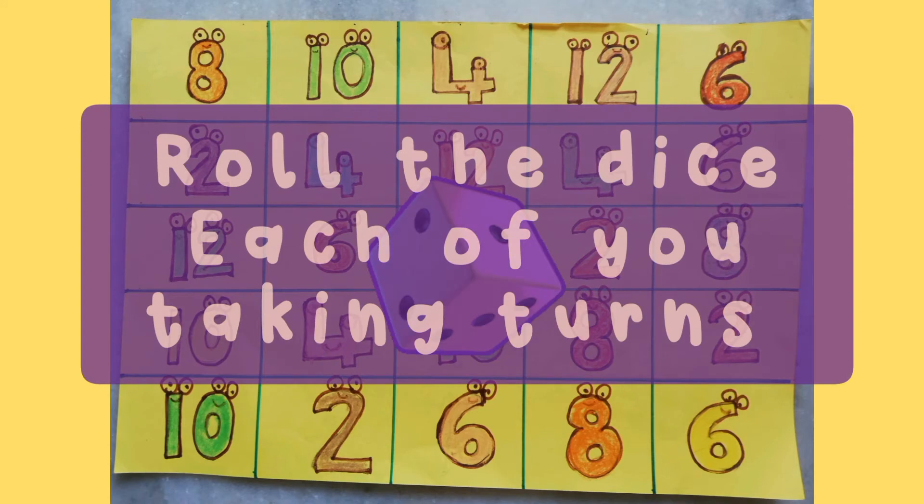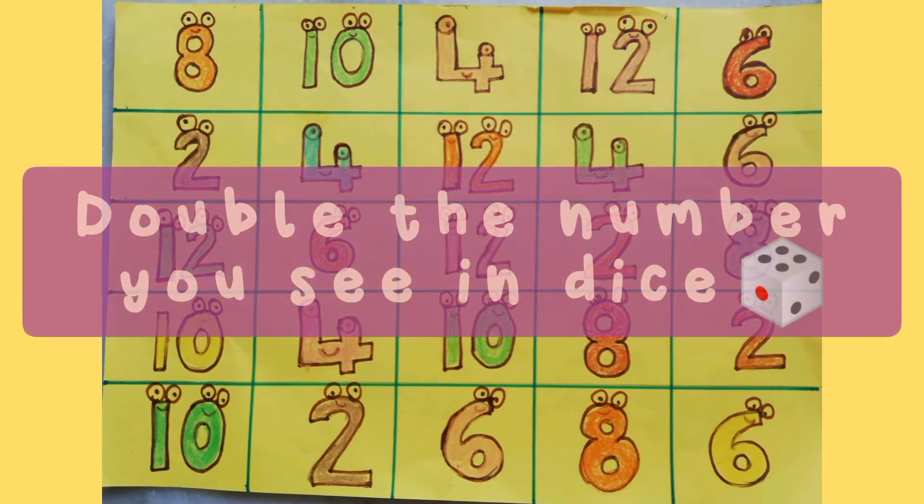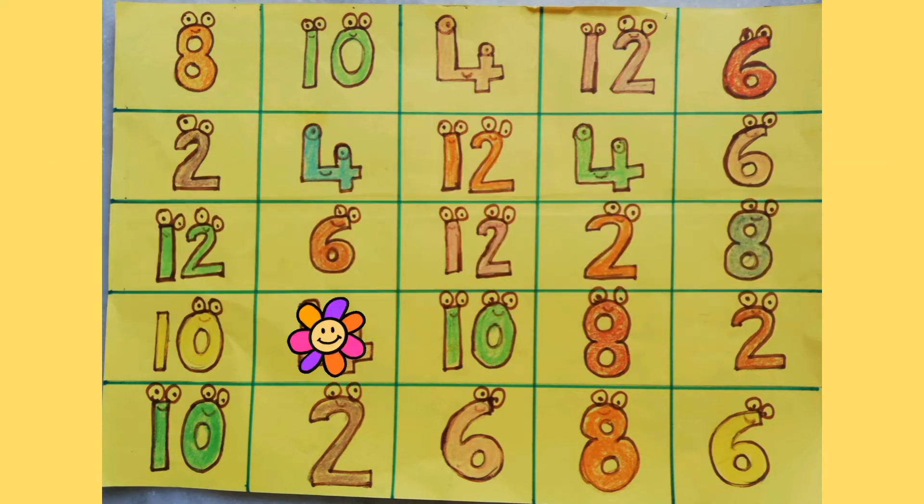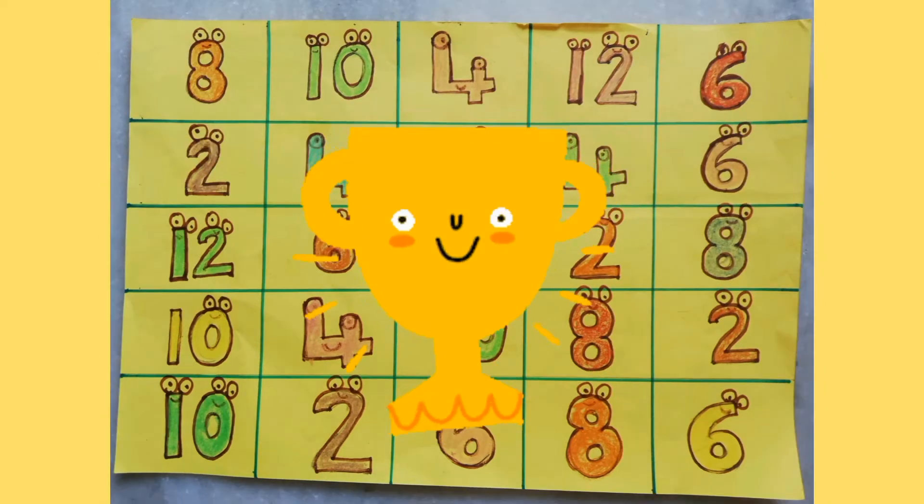Roll the dice, each of you taking turns. Then double the number that you get on the dice. Then mark the numbers wherever you see them on the board. The one who finishes the full row first wins the game.